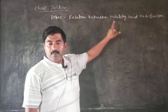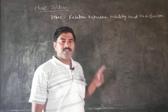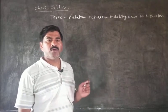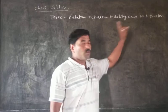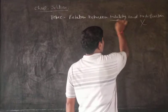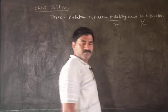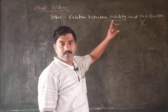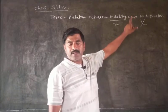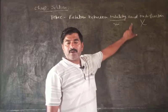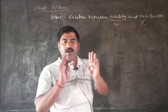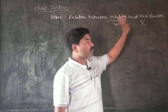The number of moles of solute dissolved in 1 kg of solvent is known as molality. Mole fraction is defined as the ratio of the number of moles of one component to the total number of moles of all components.